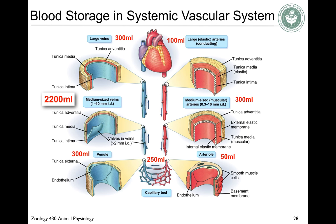Regarding blood storage: in a schematic of cross-sections of the vessels, the large arteries are really thick and elastic with some blood in them, a little less in the arterioles and then the capillaries. Over on the venous side, the walls are much thinner and under much lower pressure. Most of the blood storage is in the medium and large-sized veins. Hopefully that helps with your understanding of peripheral circulation. Take care, bye-bye.